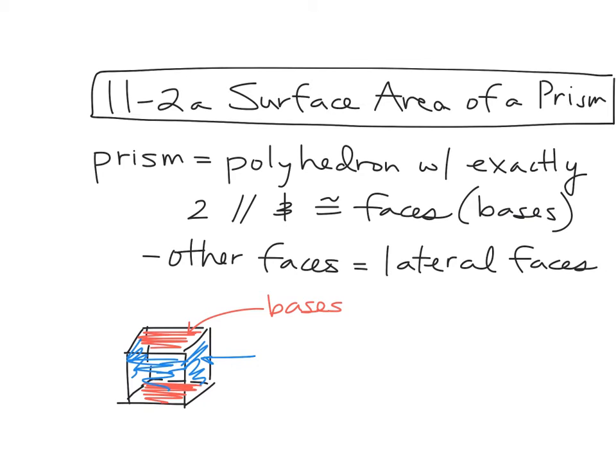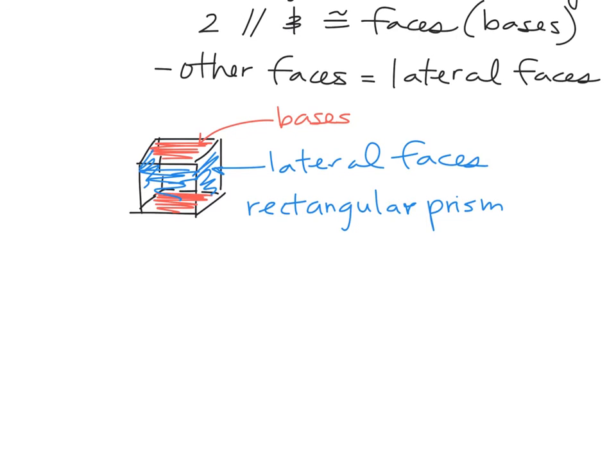Okay. So those are lateral faces. So I would call this a rectangular prism, which is what we're really going to focus on. There are plenty of other types of prisms. For instance, this is a hexagonal prism.